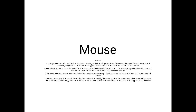The second type, the opto-mechanical mouse, uses a mechanical sensor to detect movement. The third type, the optical mouse, uses light rays to track the cursor.